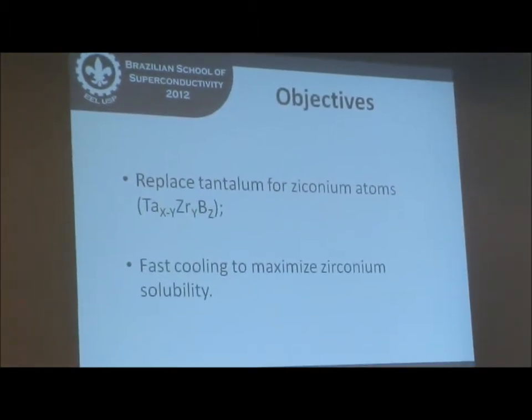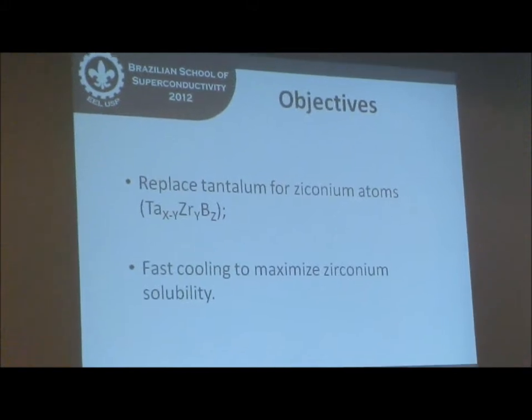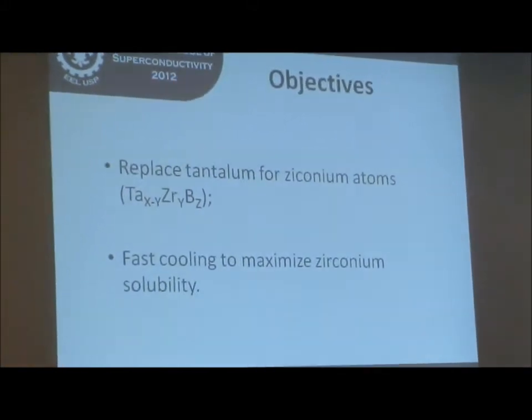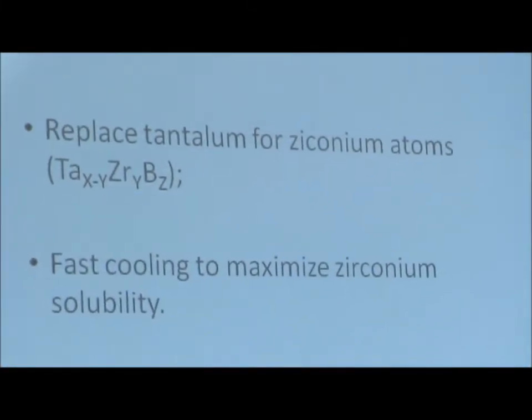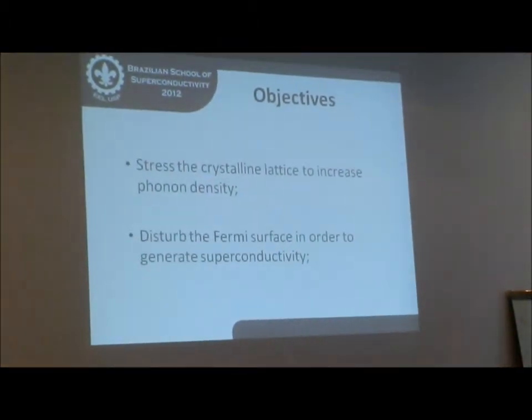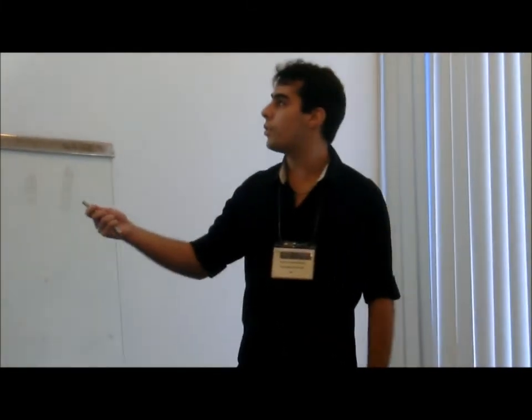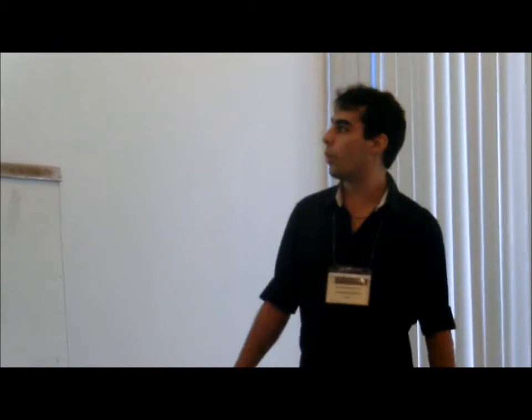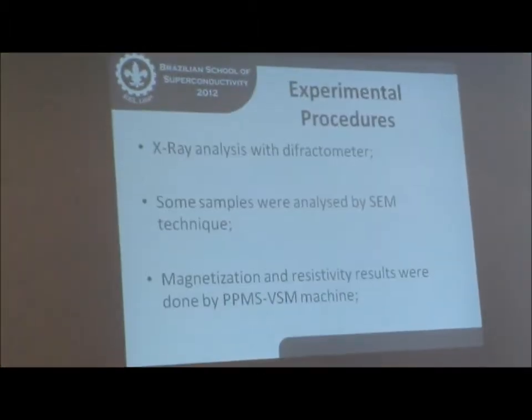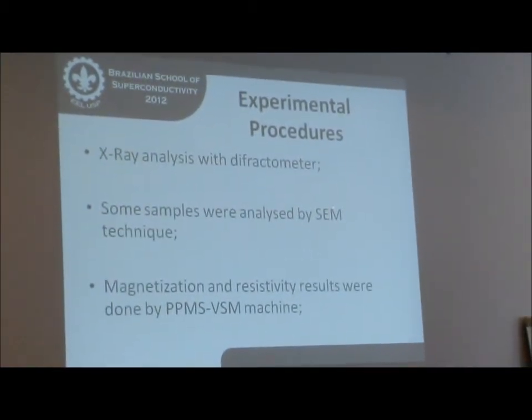What are our objectives here? We tried to replace the tantalum for zirconium atoms, and we did a fast cooling in order to maximize zirconium solubility. But why would we want to do this? We are trying to stress the crystalline lattice to increase the quantum design or to disturb the Fermi surface in order to generate superconductivity. Our samples were weighted. The elements like tantalum, boron, zirconium were weighted at stoichiometric compositions, and the samples were arc melted under argon atmosphere. Our results came from x-ray diffraction technique. Some samples were analyzed by SEM technique.